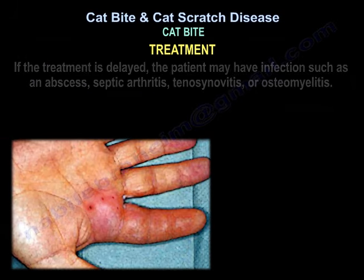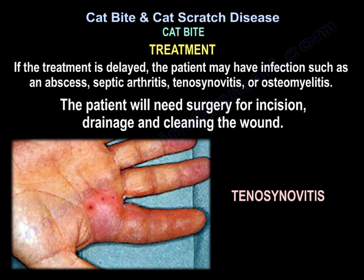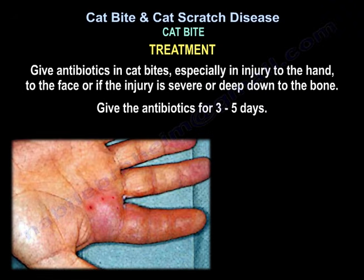If treatment is delayed, the patient may develop infection such as abscess, septic arthritis, tenosynovitis, or osteomyelitis. The patient will need surgery for incision and drainage and wound cleaning. Give antibiotics in cat bites, especially if there is injury to the hand, the face, or the injury is severe or deep down to the bone.